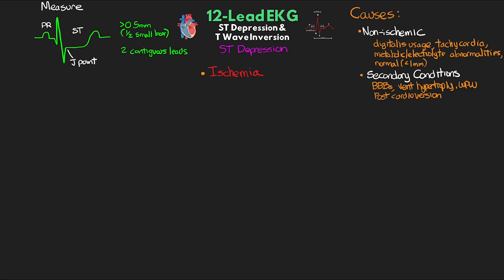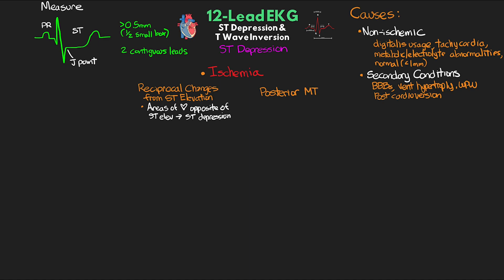We can see ST depression in the context of reciprocal changes from ST elevation in other leads. The areas of the heart opposite to the ST elevation are going to appear as ST depression. Additionally, if the patient is having a posterior transmural infarction or posterior MI, we wouldn't see the ST elevation since our normally placed leads don't have a view of the posterior. We're only going to see reciprocal ST depressions in our anterior leads — the opposite side from posterior — so V1 through V4, and typically greatest in V2 or V3.